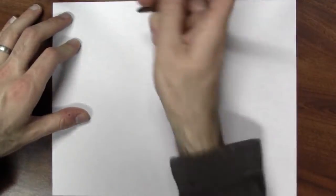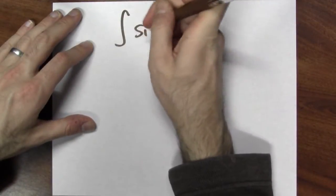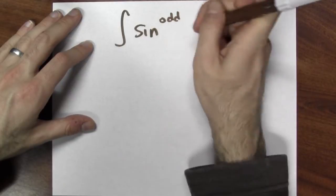We already know how to handle some integration problems where the integrand is powers of sines and cosines. For example, I can anti-differentiate sine to an odd power. How? By trading in all but one of those sines for cosines.